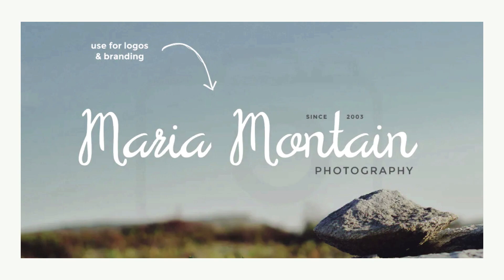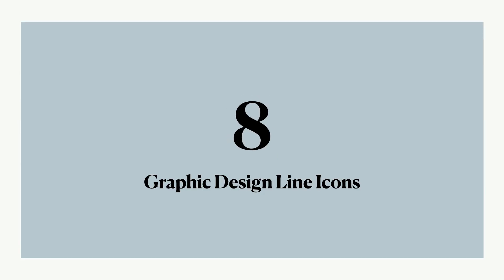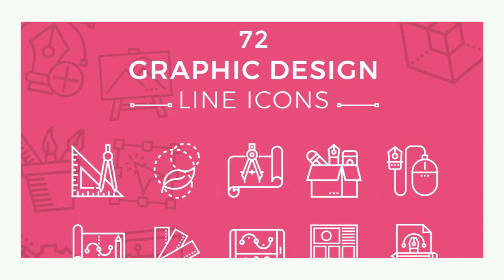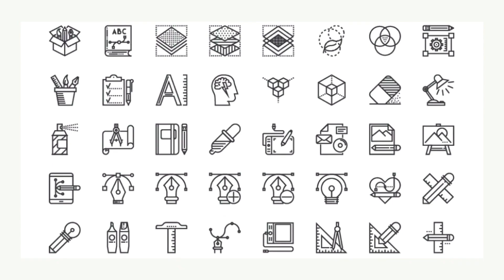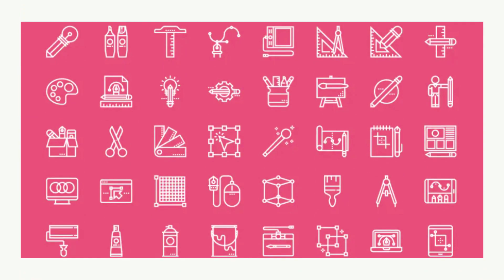Now on to number eight, Graphic Design Line Icons. Every WordPress developer needs a set of icons in different styles that they can access for various purposes. With your Envato Elements subscription, you have access to an endless pool of icons in every style imaginable, like the Graphic Design Line Icons set featured here. These icons are all provided in transparent PNG files and are easy to customize using vector software like Adobe Illustrator.